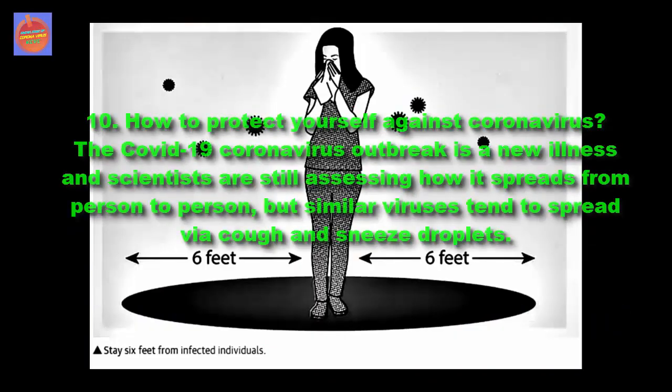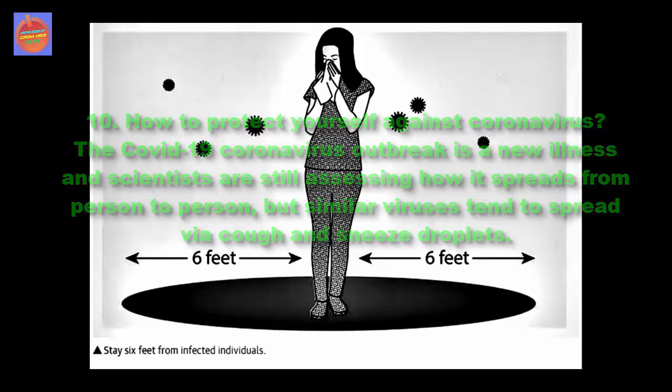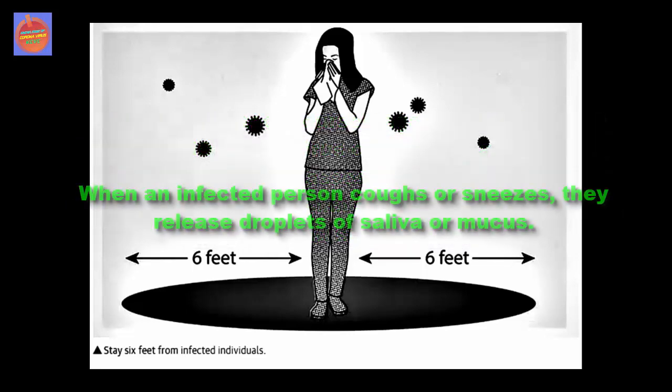Question 10: How to protect yourself against coronavirus? The COVID-19 coronavirus outbreak is a new illness and scientists are still assessing how it spreads from person to person, but similar viruses tend to spread via cough and sneeze droplets. When an infected person coughs or sneezes, they release droplets of saliva or mucus.